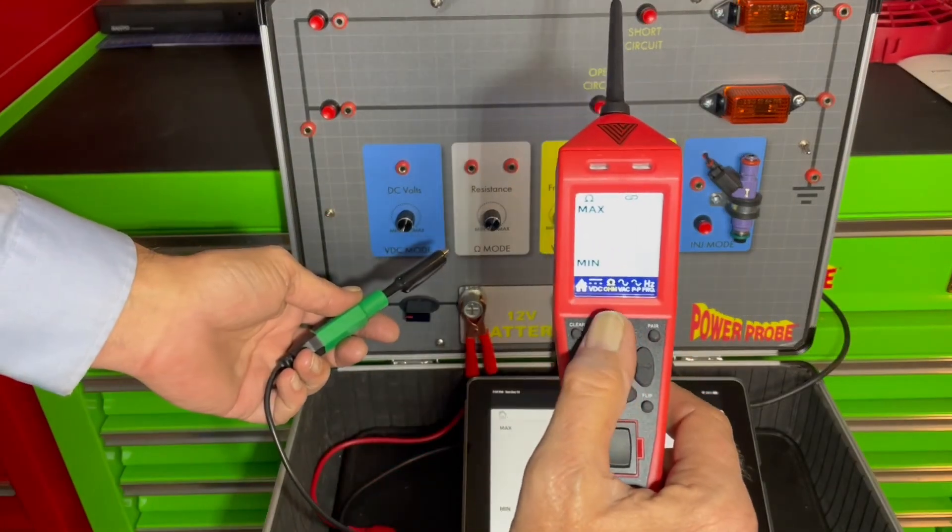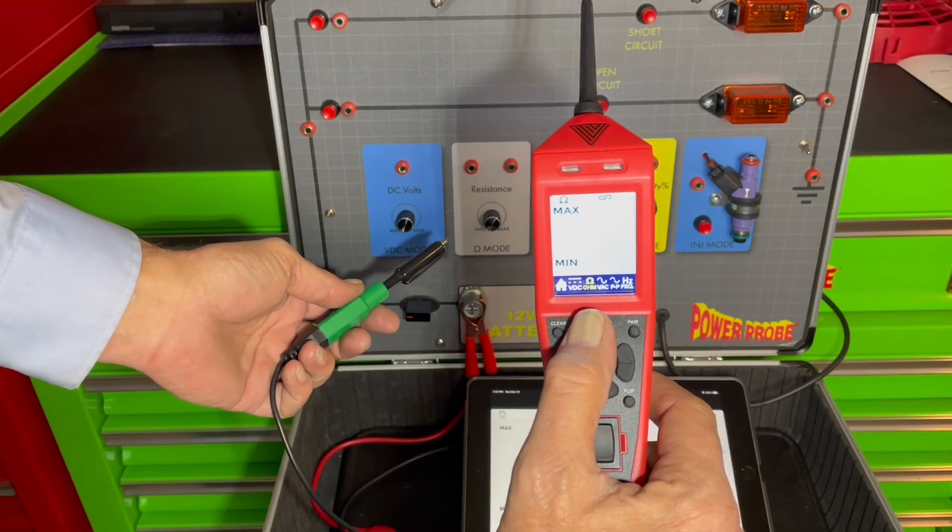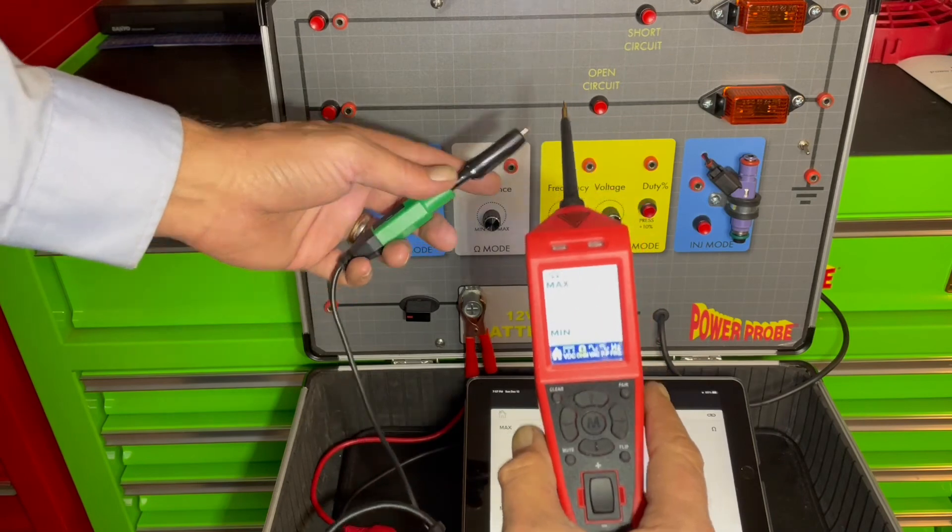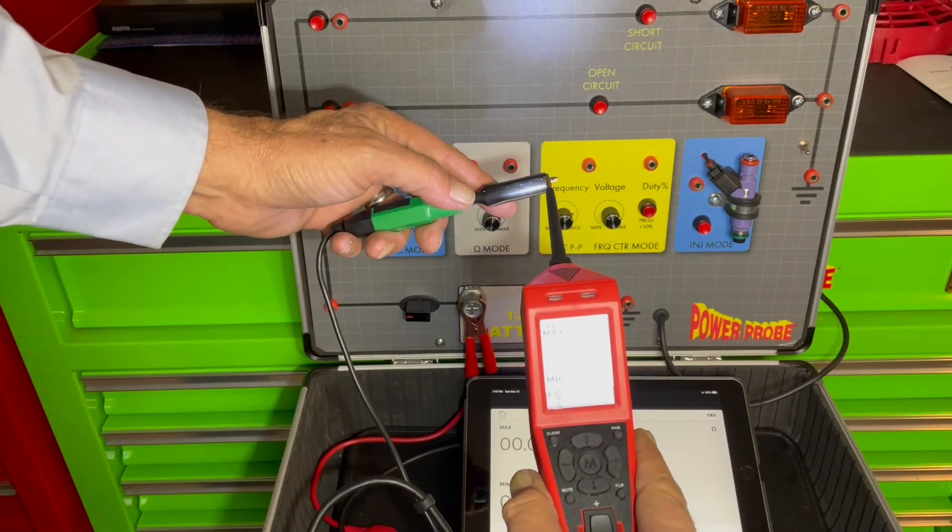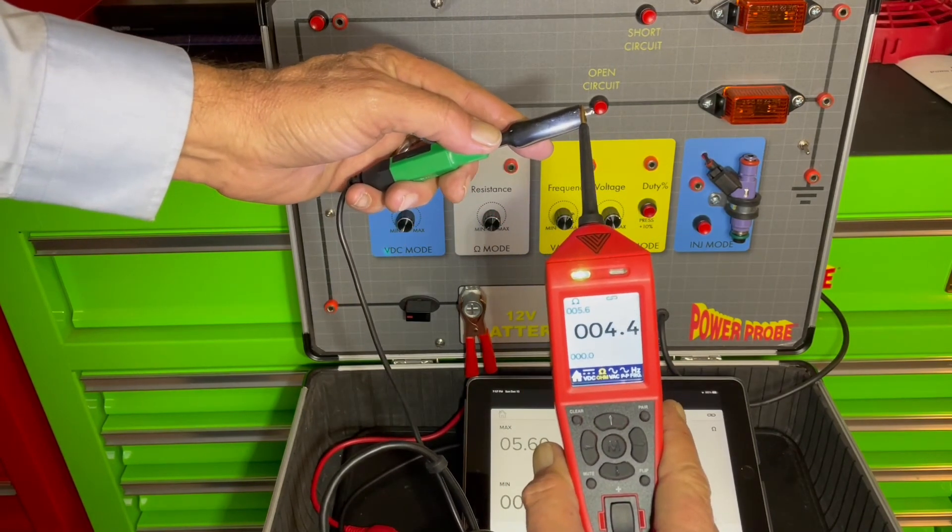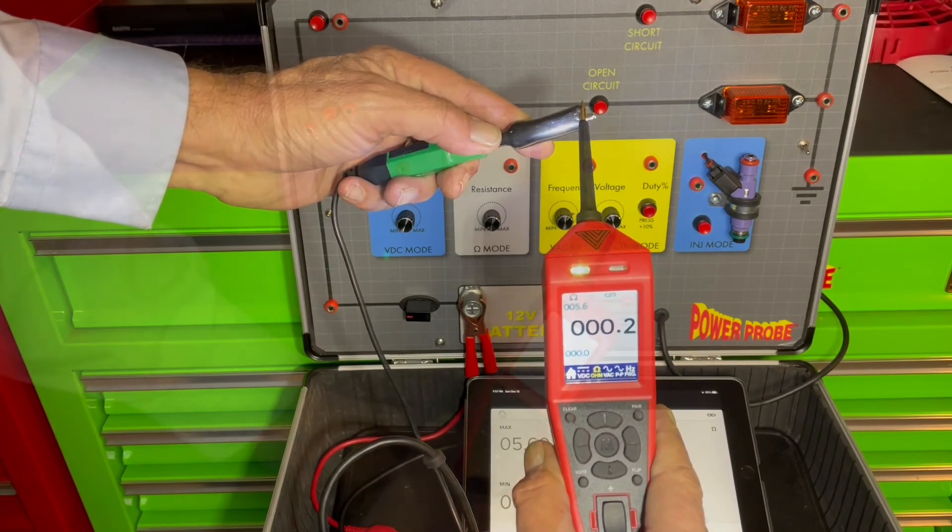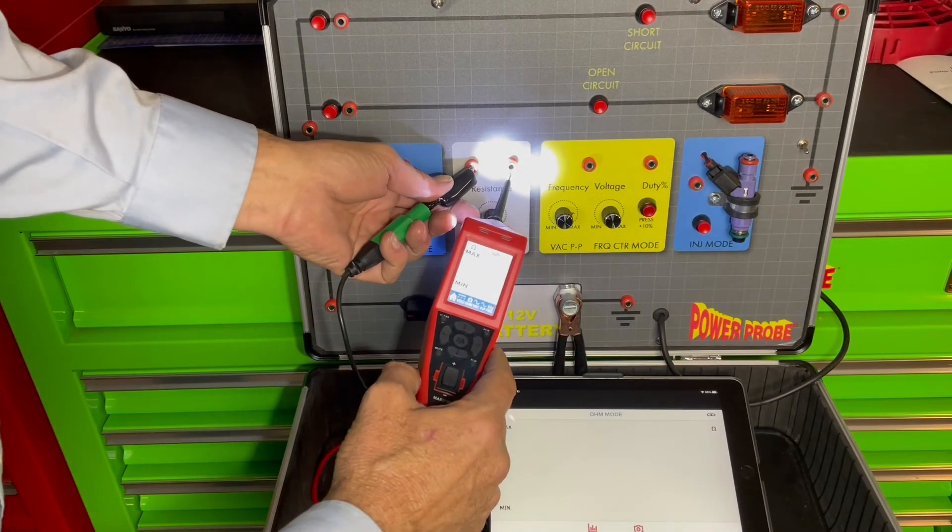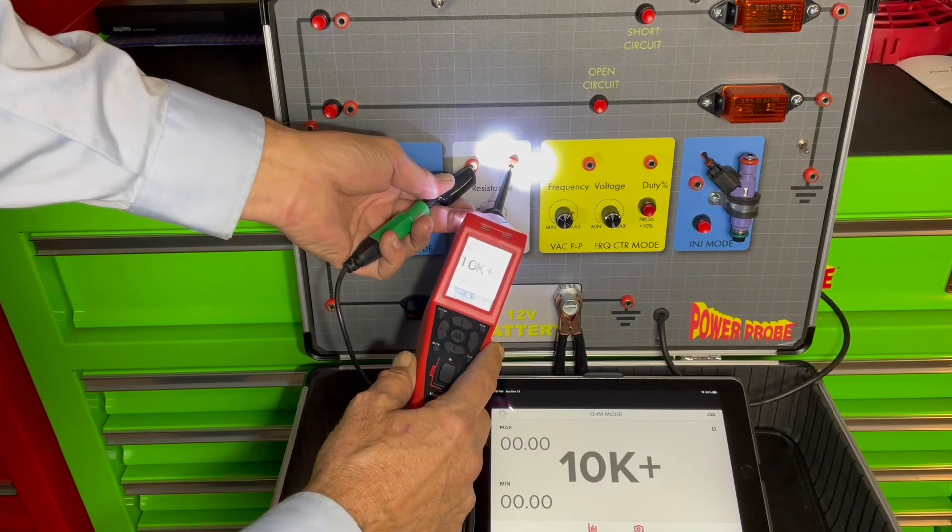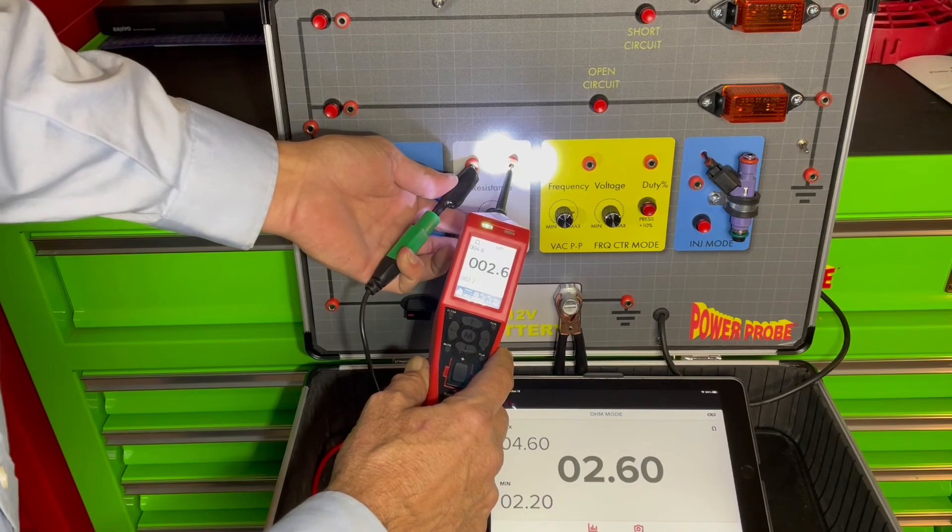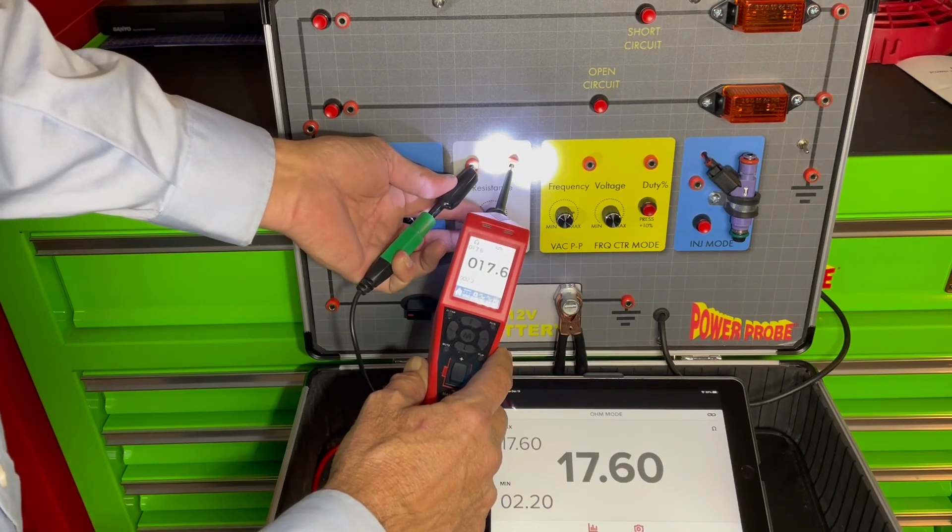Next on the menu is the ohmmeter mode which will display resistance from ground to tip, or from the ground lead to tip, it should be zero. And whatever is displayed on the screen of the tool will be displayed in the app.